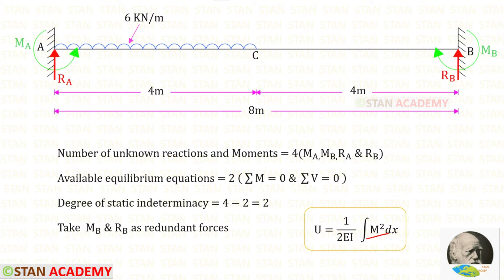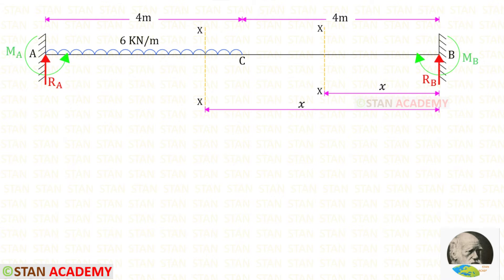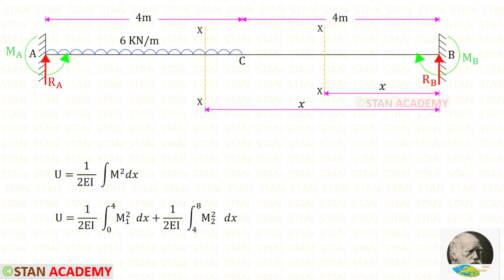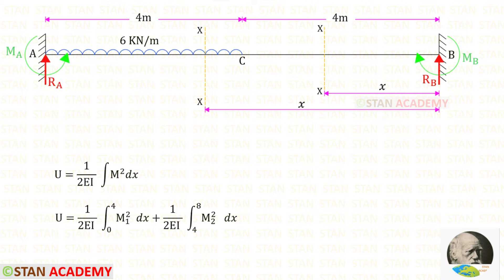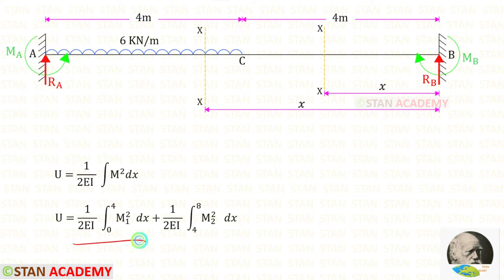In this beam there are two different parts: AC and CB, so we have to make two sections — one in AC and one in CB. Both sections are made at the distance x from point B. Since there are two sections, we split the formula into two parts: one for section CB with limits 0 to 4, and one for section AC with limits 4 to 8.